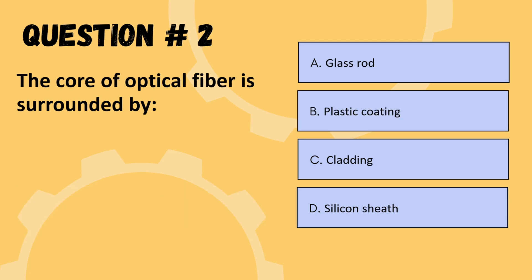The next question is: the core of optical fiber is surrounded by — options are glass rod, plastic coating, cladding, or silken sheath. The correct option is C: cladding.